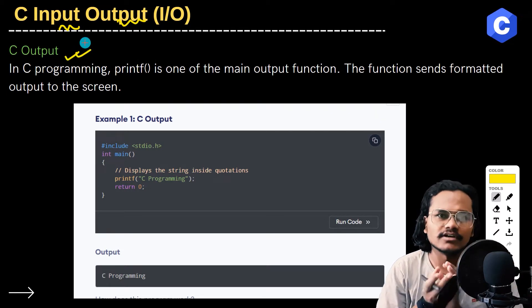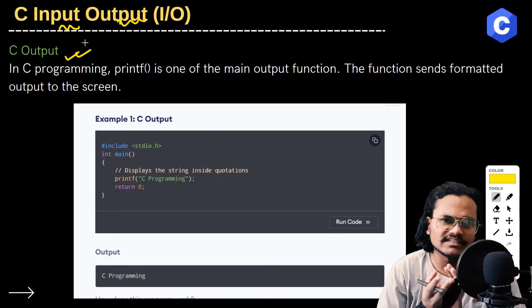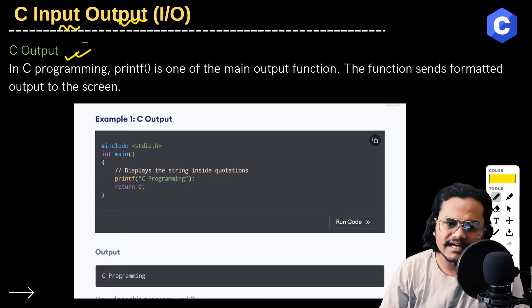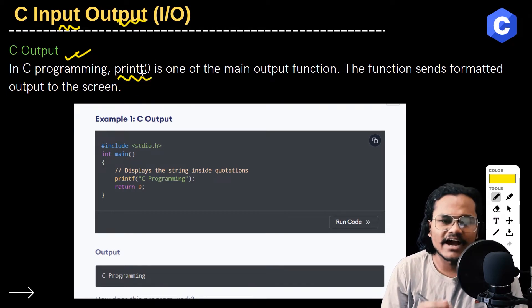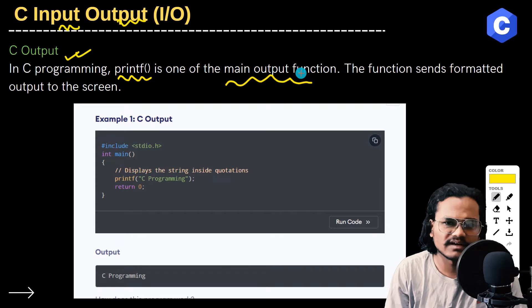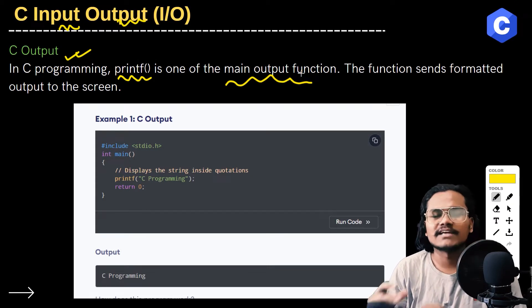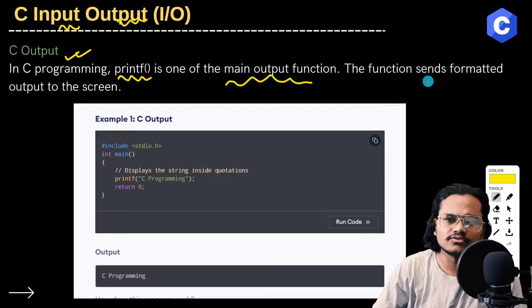In C programming language, for output we use the printf function. Printf is one of the main output functions. This function sends formatted output to the screen.